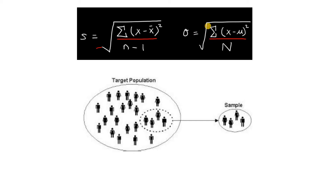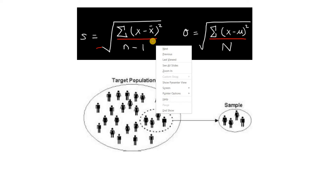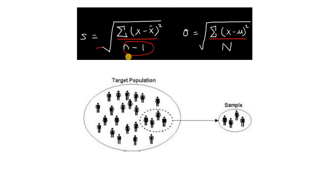Whereas the standard deviation formula for population is: summation of (x minus mu) squared — for each data point we compute the difference with respect to the mean, square them, take the sum of all of them, divide by total number of data points in the population, that is n, and then take the square root. The major difference in these formulas is: for sample, n minus 1 is used in the denominator, whereas for population, n is used. You should not consider any formula blindly — understand the intuition behind it, then you can easily remember it.